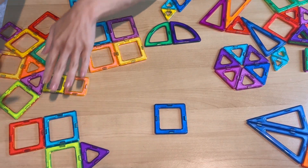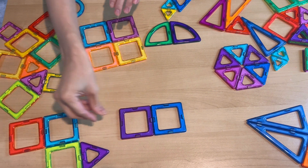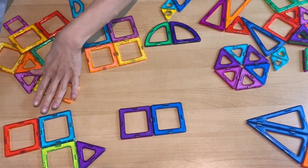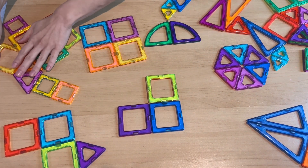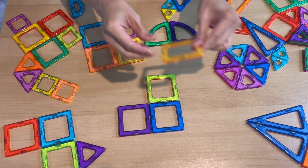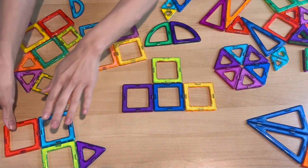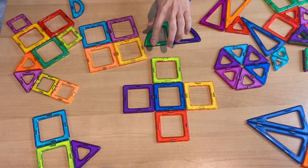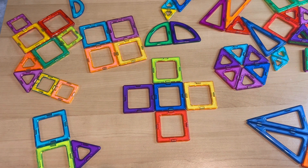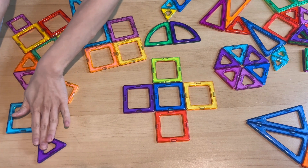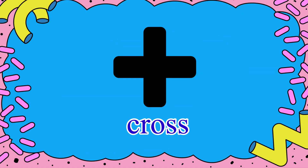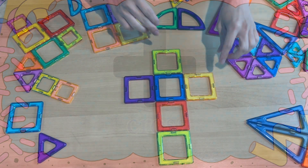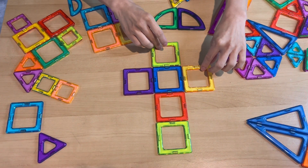Now we go back again to our squares, apart from the circles. It's a cross. This is also a cross 2D shape.